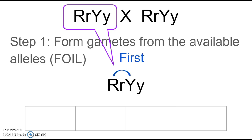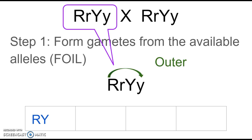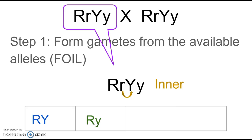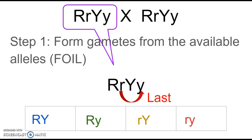Using the FOIL method: First — you take the first R and put it with the first Y, giving you capital R capital Y. Outer — that's your first R with your second Y, giving you your second gamete. Inner — your second R with your first Y, that's your third gamete. Last — your second R with your second Y, and that gives you your fourth gamete. Now you have all four gametes.